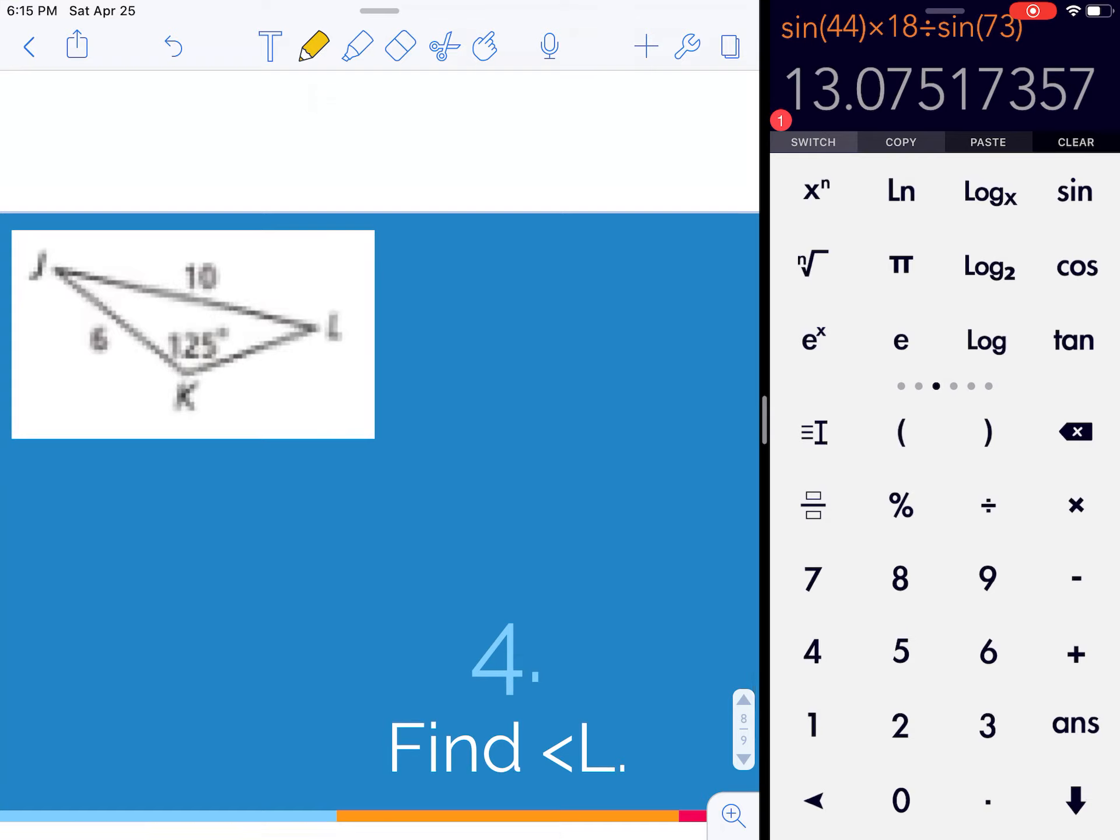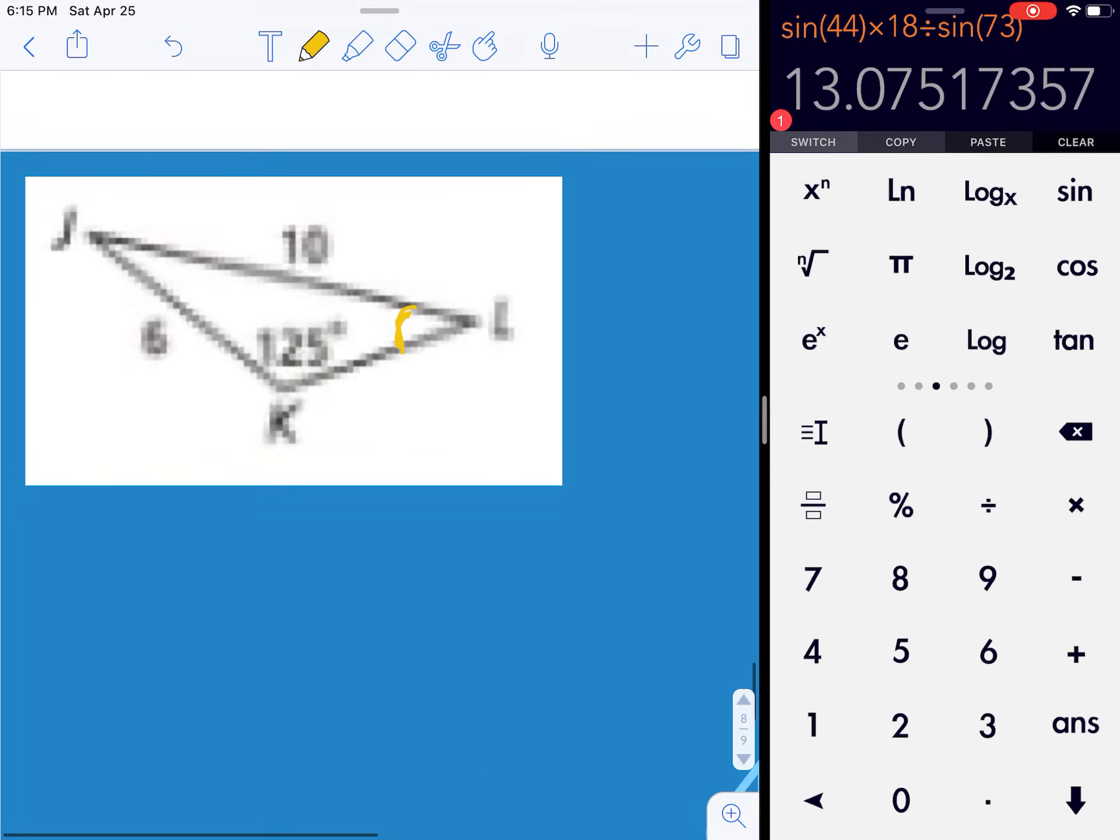This time we're asked to find angle L. So we're going to do another one where I have to use that inverse. Anytime I'm looking for angles, I know I'm going to have to use the inverse. So I'll have the sine of L divided by 6 equals the sine of 125 divided by 10.